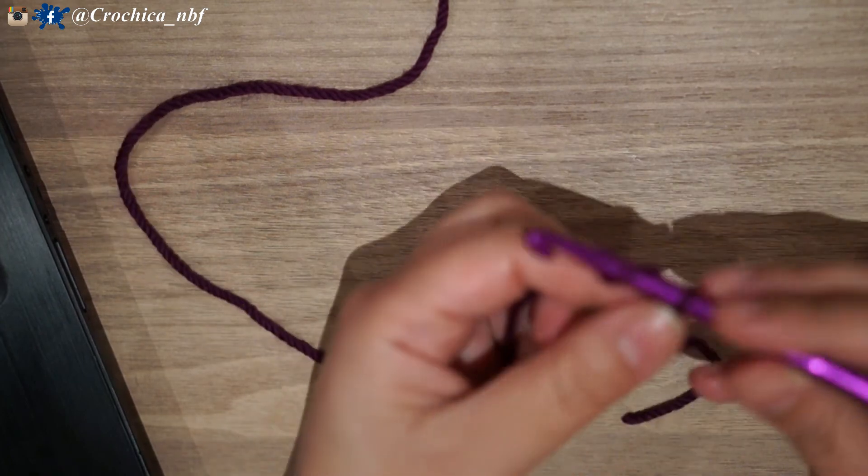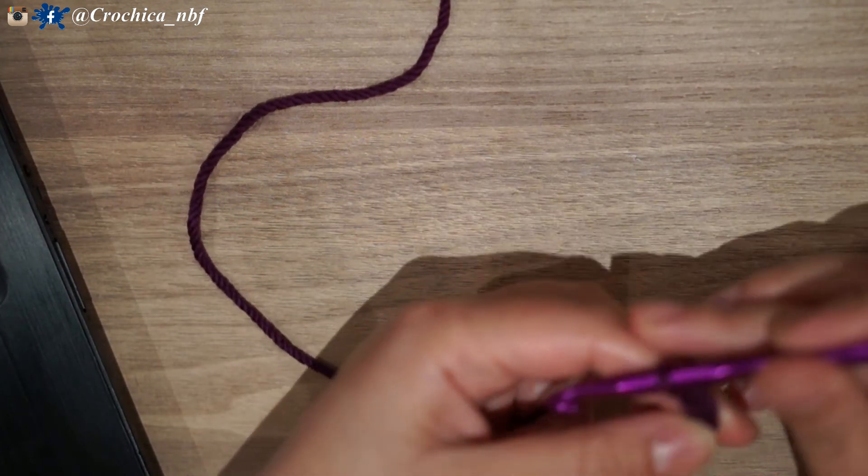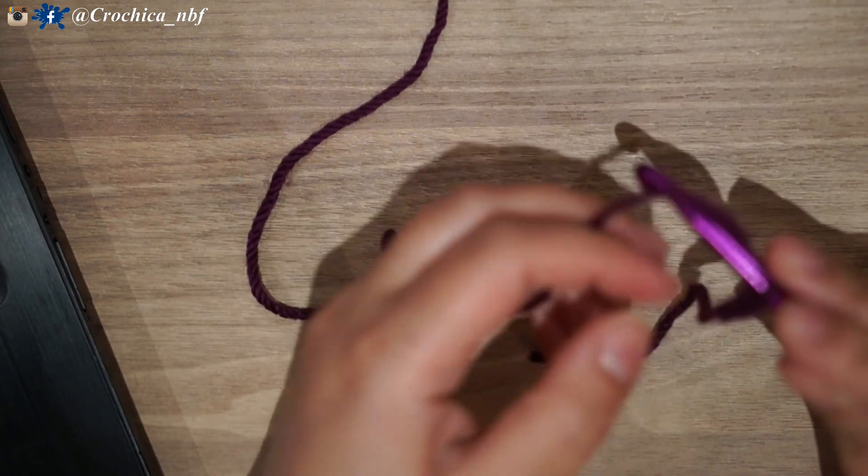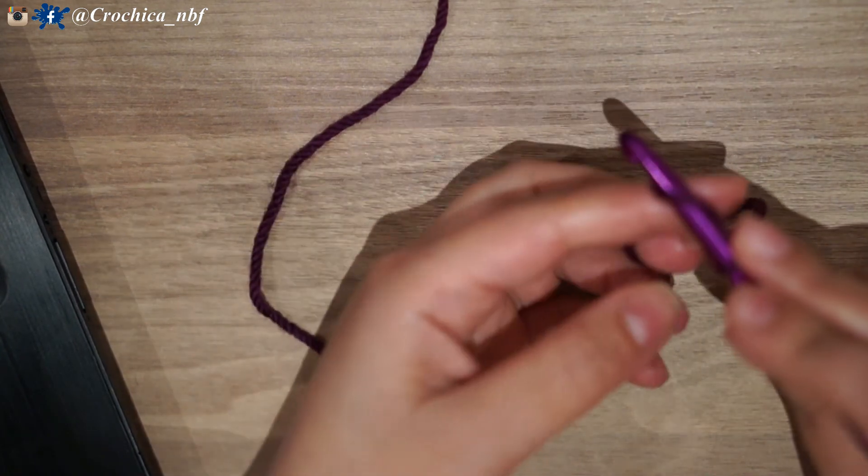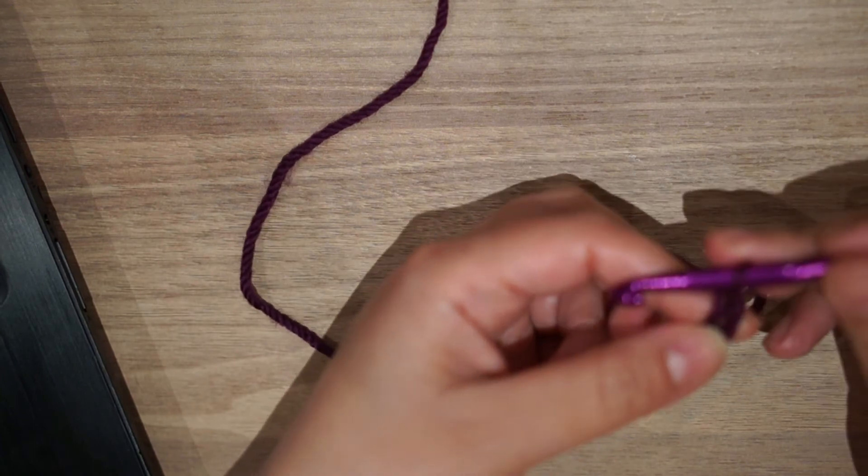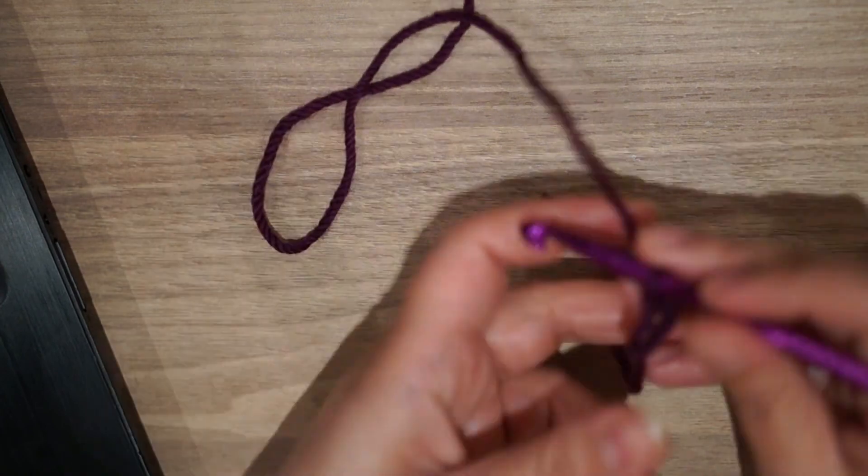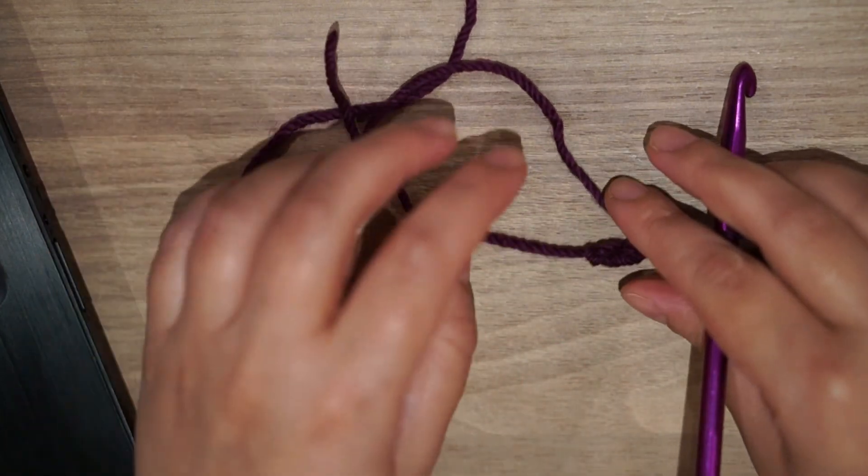From that point I will start making my chain, which is yarn over the hook. This means you put your thread on top of the hook and then you pull it through the ring. This is as easy as it is.